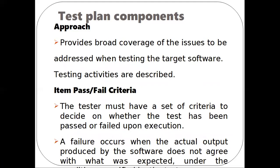The next component is approach. An approach covers all the issues to be addressed when testing software. Testing activities are described, including features or combinations of features and what kind of approaches need to be followed. The next component is the pass or fail criteria. This is a set of criteria used to decide whether the corresponding test executions are passed or failed. A failure occurs when the actual output fails to meet the corresponding requirement in the expected output.